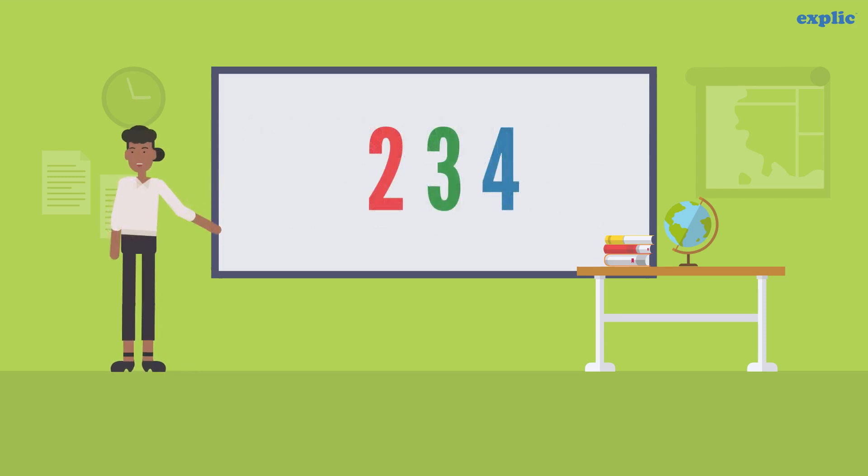A digit is a single symbol used to make numerals. For example, 234 is made of digits 2, 3, and 4.